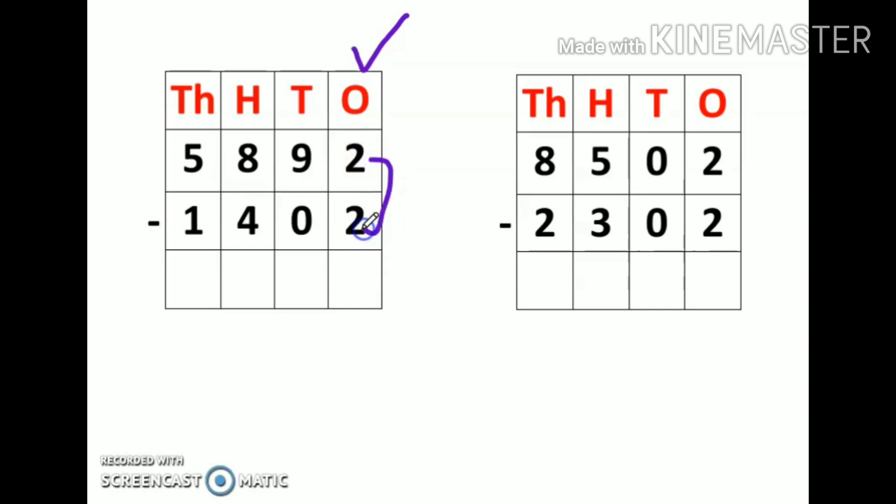Two minus two, so my answer is zero. Whenever the same number is subtracted from a number, then the answer is zero. Nine minus zero is nine, eight minus four is four, five minus one is four. So my answer is 4,490.